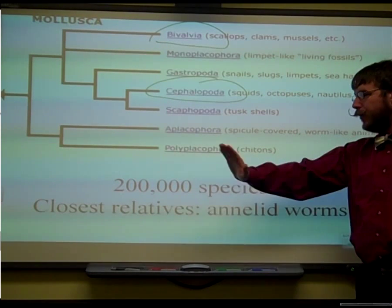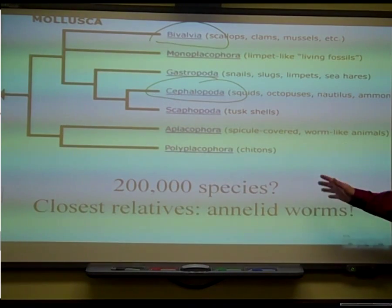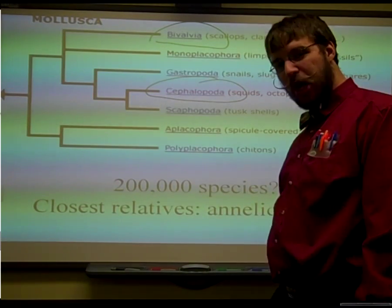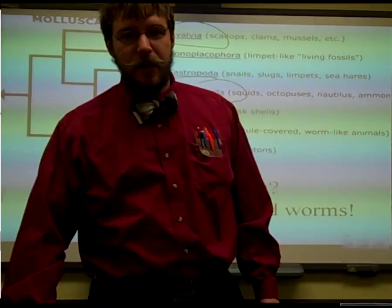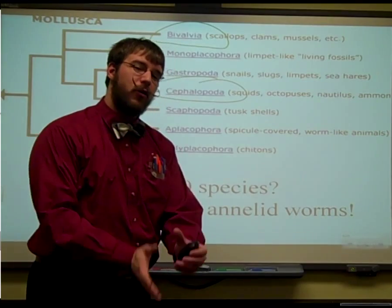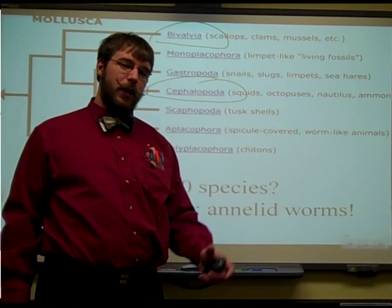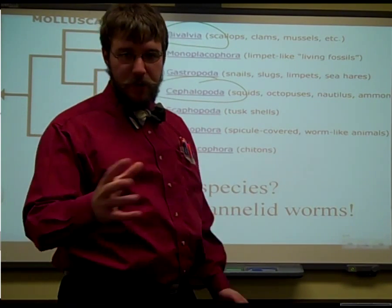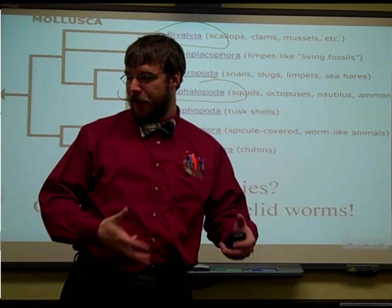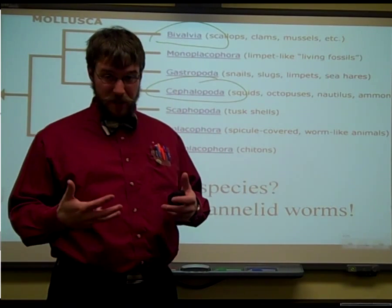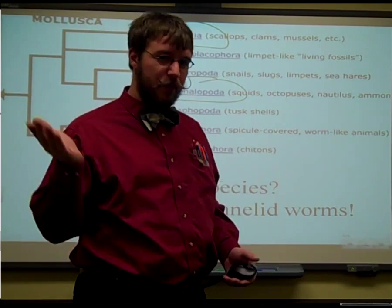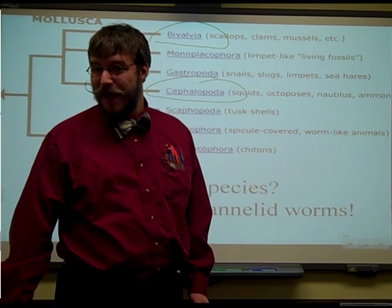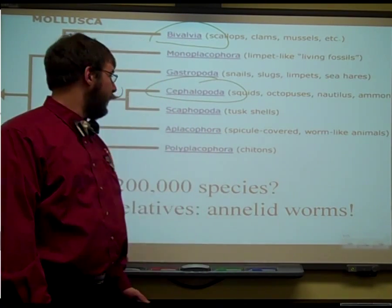It's worth mentioning that there are over 200,000 different species of molluscs, and they're very closely related to annelid worms, however they branched off just a little bit before that. They've got this weird body compartmentalization thing going on like the annelid worms, but they don't have the same kind of segmentation that annelid worms have.